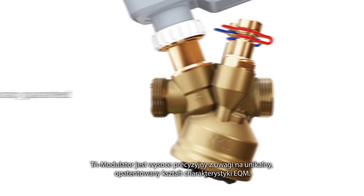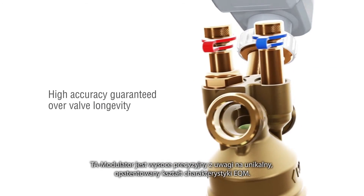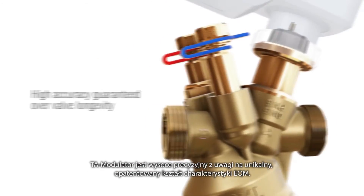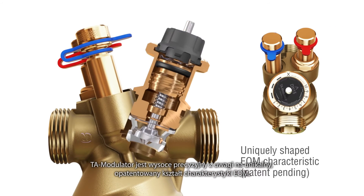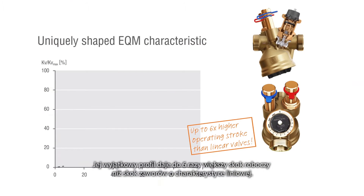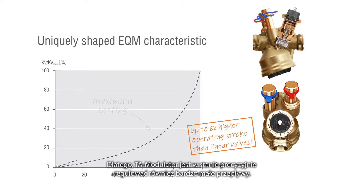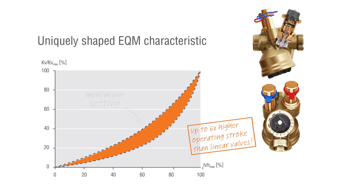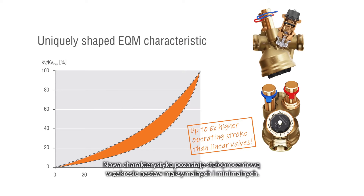The new highly precise TA Modulator is unique due to its new patent-pending uniquely shaped EQM characteristic. Its uniquely shaped profile provides an up to 6 times higher operating stroke than linear valves. Therefore, TA Modulator is able to precisely control also very small flows. The new characteristic remains equal percentage within the range of maximum and minimum flow settings.